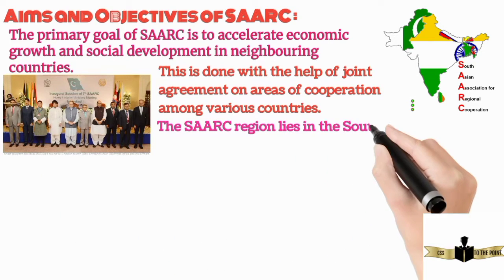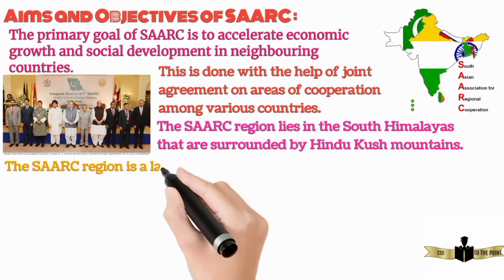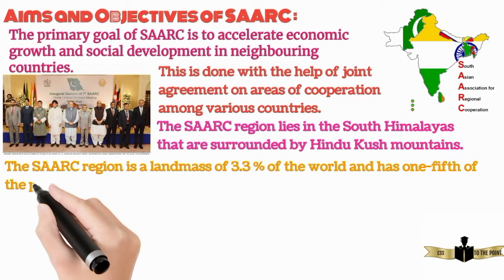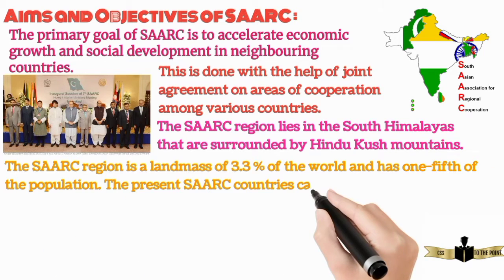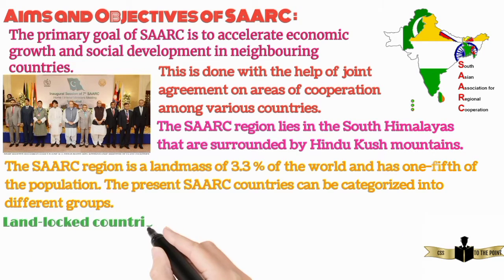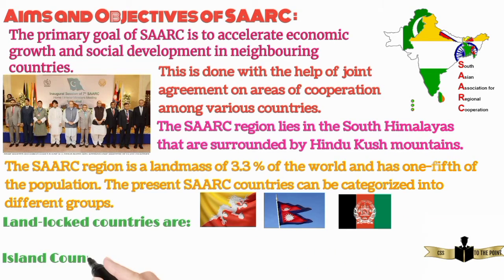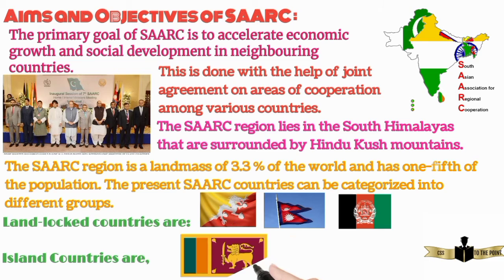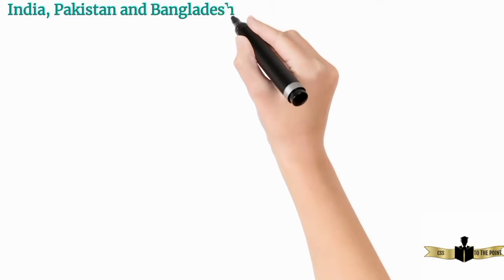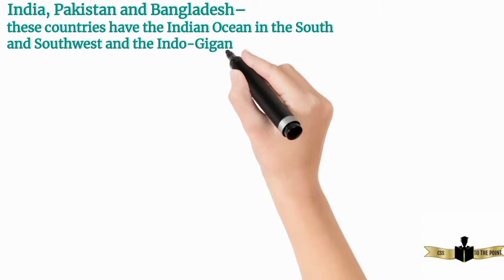The SARK region lies in the South Himalayas, surrounded by the Hindu Kush mountains. The SARK region covers 3.3% of the world's landmass and has one-fifth of the population. The present SARK countries can be categorized into different groups: three landlocked countries — Bhutan, Nepal, and Afghanistan; two island countries — Sri Lanka and the Maldives; while the remaining members are India, Pakistan, and Bangladesh. These countries have the Indian Ocean in the South and Southwest, and the Indo-Gangetic Plains.